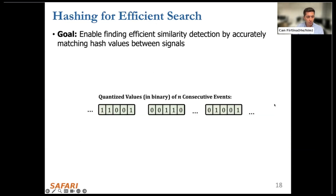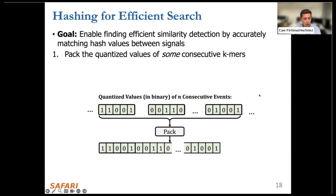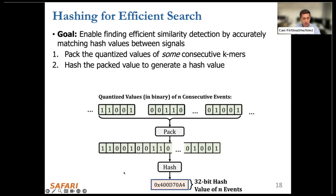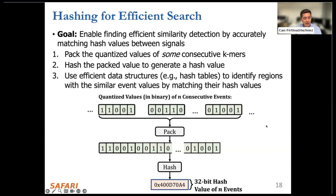To perform this matching, we take consecutive events, pack them, and use a hash function to generate hash values of these consecutive events, which may correspond to consecutive K-mers within the signal. We can use efficient data structures such as hash tables to identify regions with similar event values by matching their hash values between the reference genome and the raw signal.